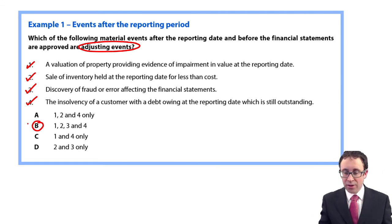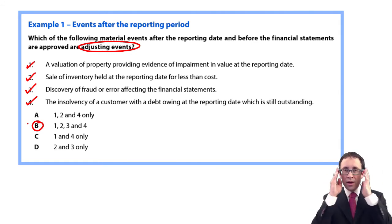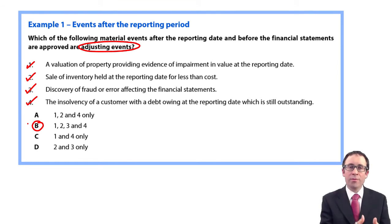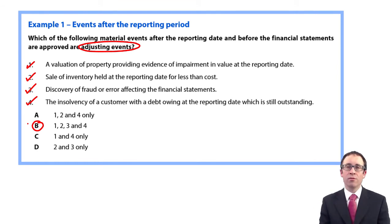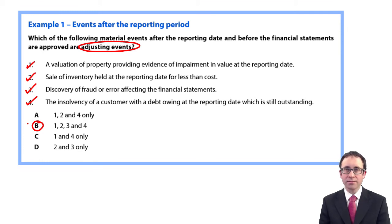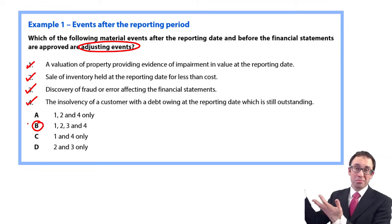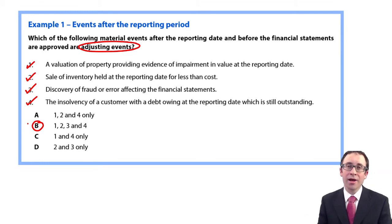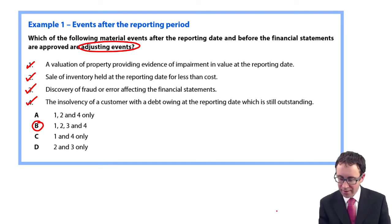The one to add to your list is the property valuation received after the reporting date when it was noted that there was an impairment indicator at that reporting date. It's a bit unusual to see all four options being correct, but there you have it.